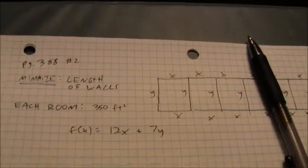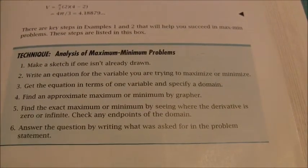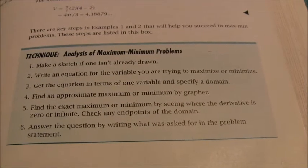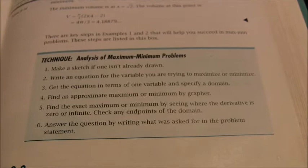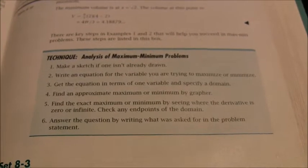If you take a look at Forrester's suggestions, Forrester suggests several things for max-min problems. If you take a look at his list, first of all, he says, make a sketch if you haven't already drawn one. I've done that. You want to write an equation for the variable you're trying to maximize or minimize. I've done that. You want to write the equation in terms of one variable and specify a domain.